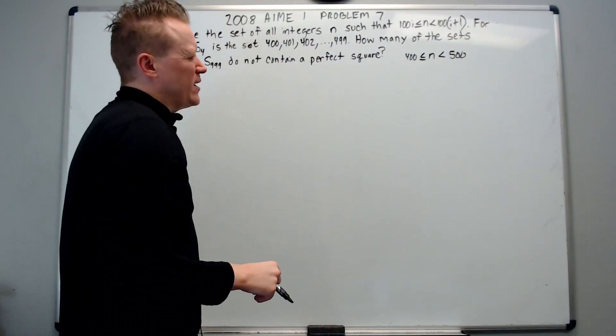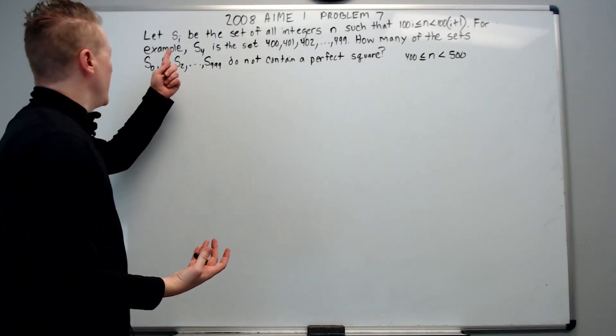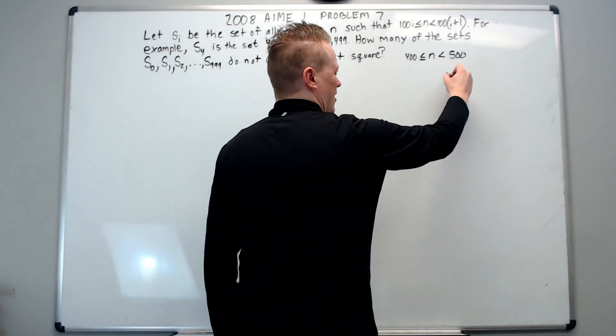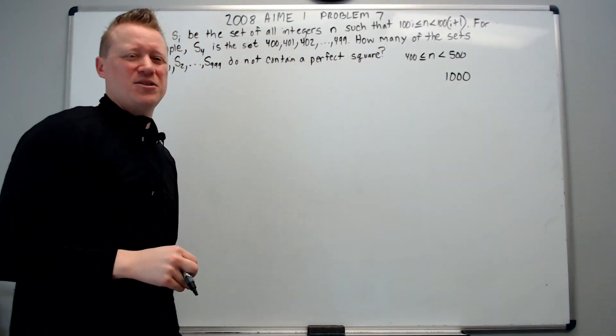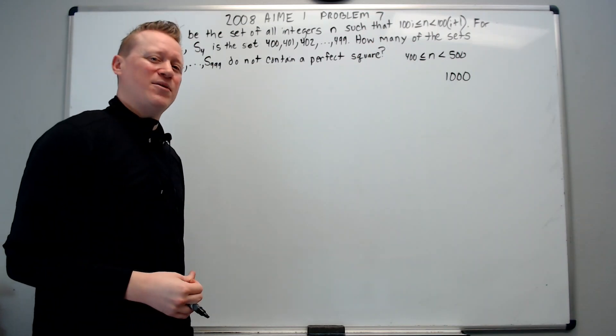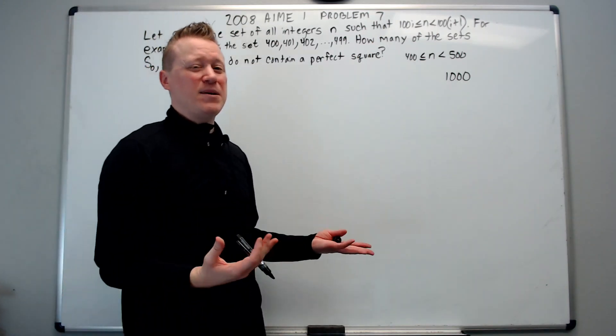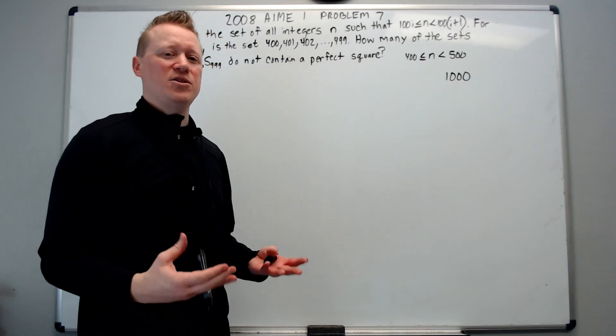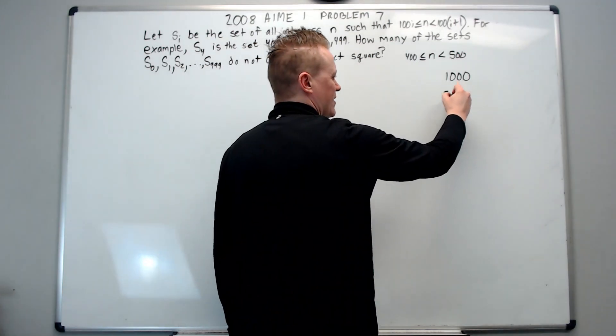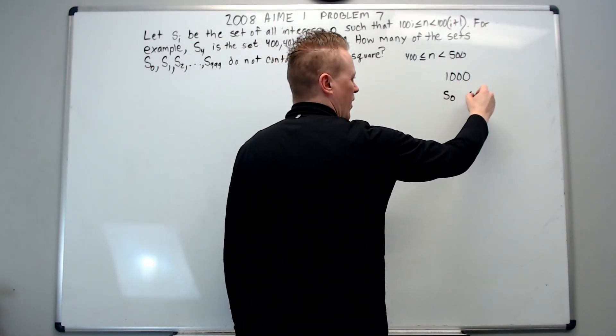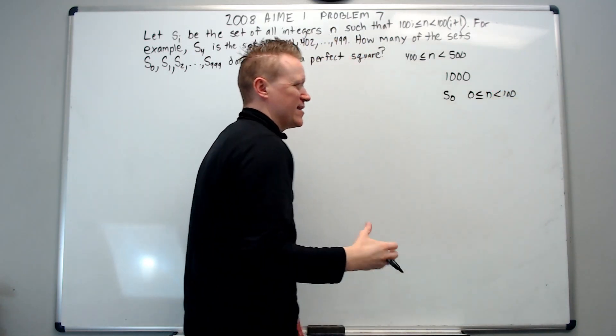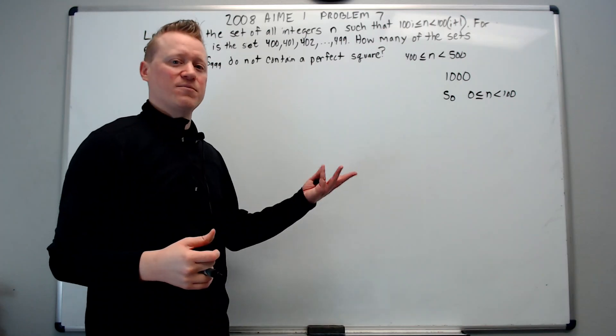Well, we could think about this now. How many sets are we working with? We're going from 0 to 999. That's 1,000 sets. So, right away, we probably should consider doing complementary counting and trying to subtract all the sets that do have a perfect square. We could get started with baby steps. When you don't know what to do, I call it baby steps. Just try some things out.